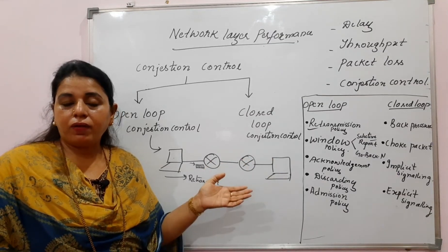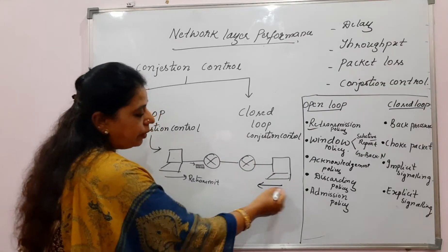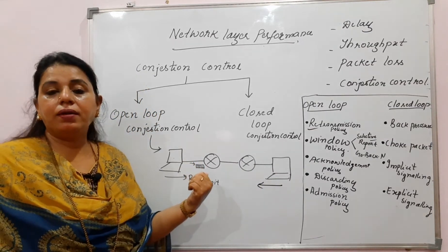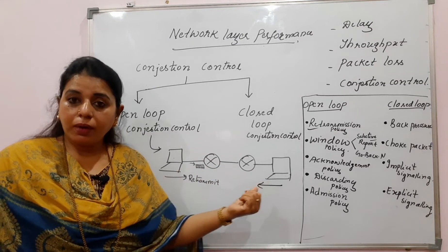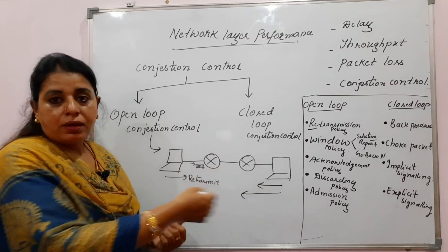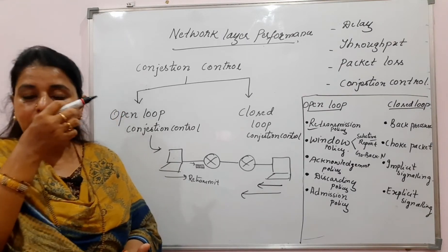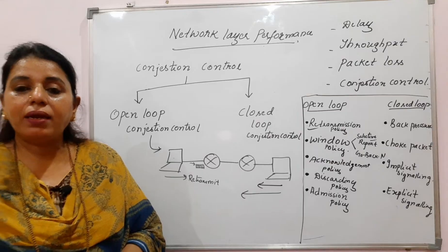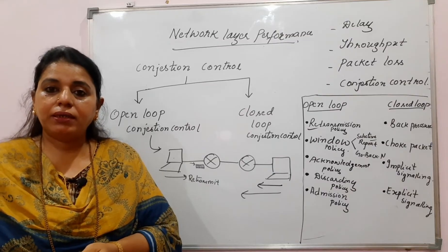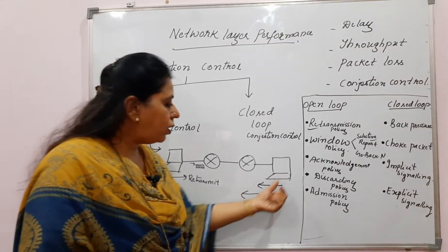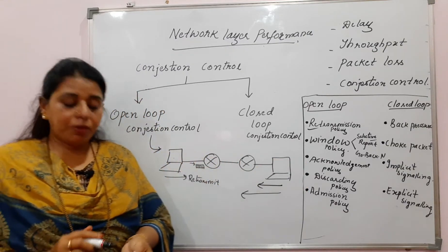The acknowledgement policy addresses the fact that sending an acknowledgement for every received packet creates many control packets, contributing to congestion. Instead, a policy where one acknowledgement is sent for a set of five or ten packets can collectively reduce the number of acknowledgement packets and help reduce congestion to some extent.